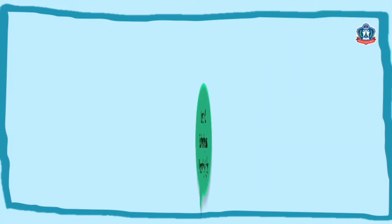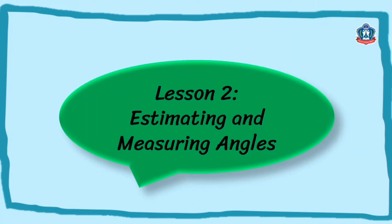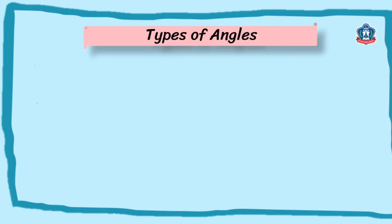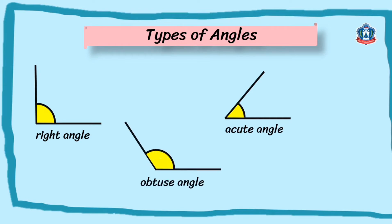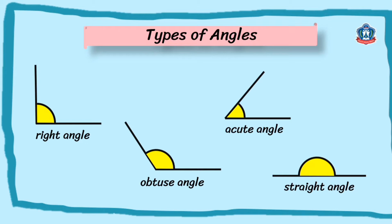Let's discuss first about estimating and measuring angles. Let's review the different angles that we learned from lesson 1. We have the right angle — it measures 90 degrees. Next is an acute angle — it measures less than 90 degrees. Another is an obtuse angle — it measures more than 90 degrees but less than 180 degrees. And the other angle is a straight angle, which measures exactly 180 degrees. So don't forget these 4 types of angles.